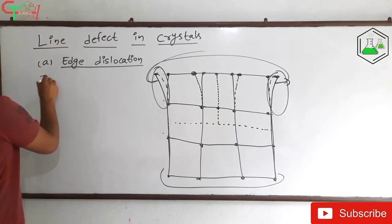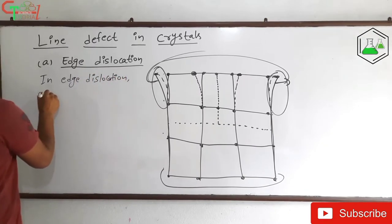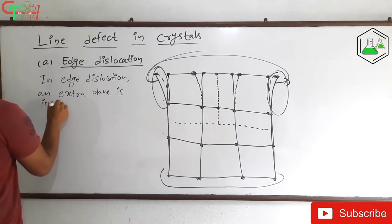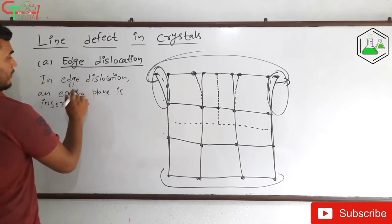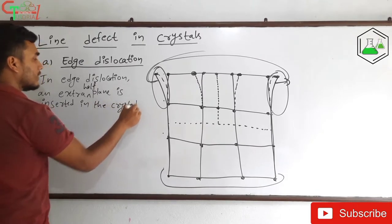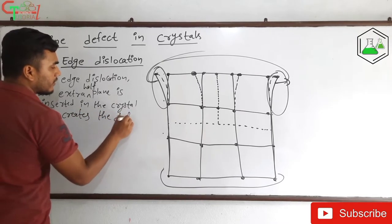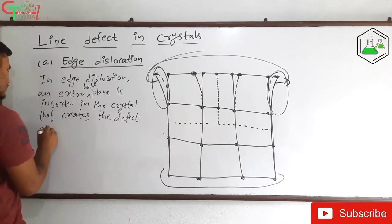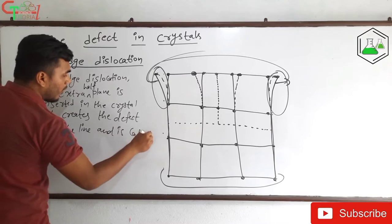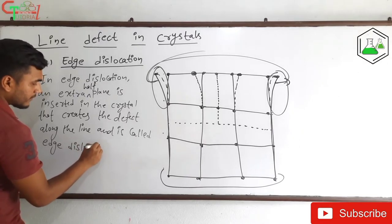In edge dislocation, an extra half plane is inserted into the crystal. This insertion creates a defect along the line, and this is called edge dislocation.